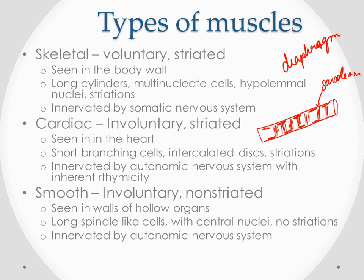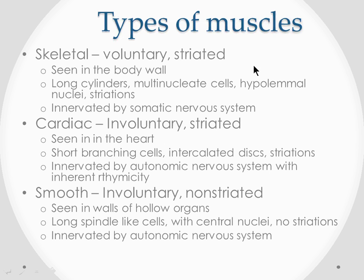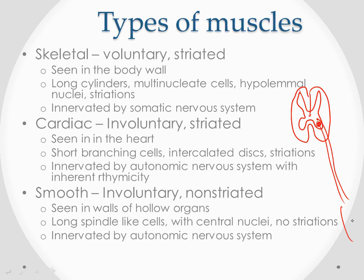Skeletal muscle is innervated by the somatic nervous system, which is the voluntary nervous system. So this muscle is voluntary and is innervated by the voluntary nervous system. In the somatic nervous system, there was a slide in muscle physiology showing the spinal cord. In the center of the spinal cord is the gray matter, and nerve fibers arise from this gray matter and go out to supply the muscle.